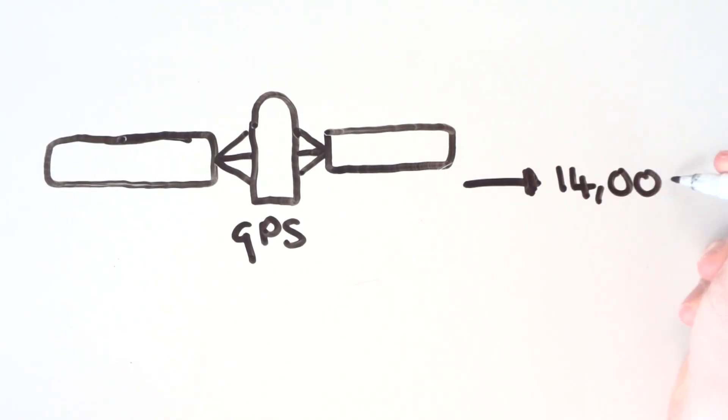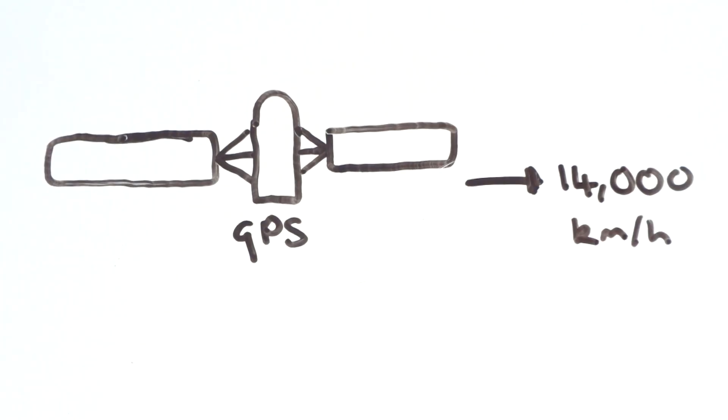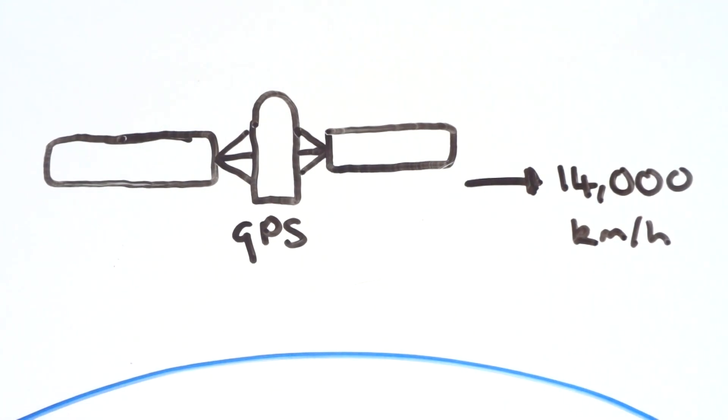Your average GPS satellite, which you use when you try to find your location on your phone, travels at 14,000 km per hour, which is slower than the International Space Station due to it travelling at a higher altitude.